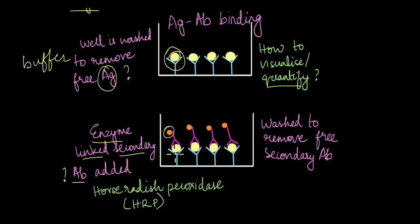Now here you can see the sandwich structure. First you have the capture antibody, then you have the antigen, then you have the enzyme-linked secondary antibody. This is why this is called the sandwich ELISA. So once the enzyme-linked secondary antibody is added, again the well is washed with a buffer solution. This is important and I'll explain in just a while why so.